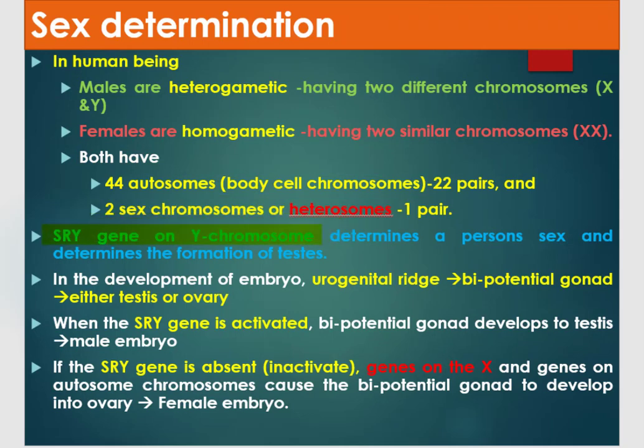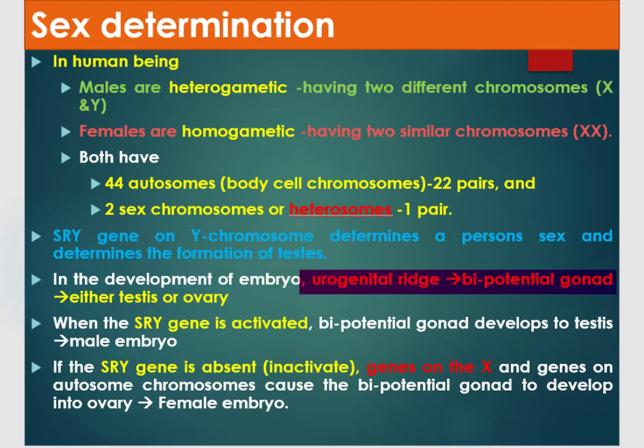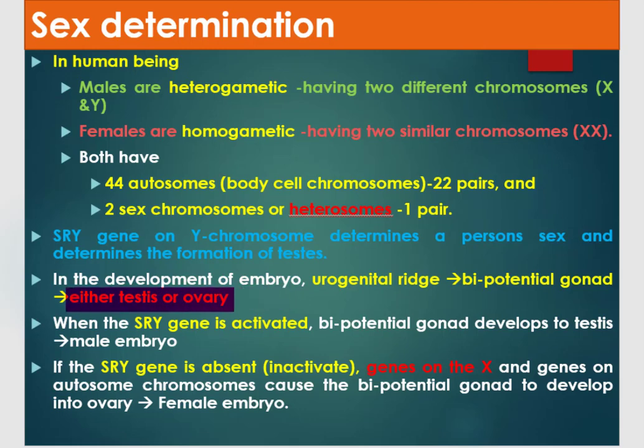There are SRY genes on the Y chromosome that determine a person's sex and the formation of the testis. In the development of the embryo, there is a urogenital ridge that develops into a bipotential gonad, which then develops into either a testis or an ovary depending on the presence or absence of the SRY gene on the Y chromosome.